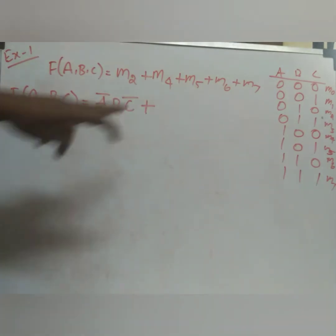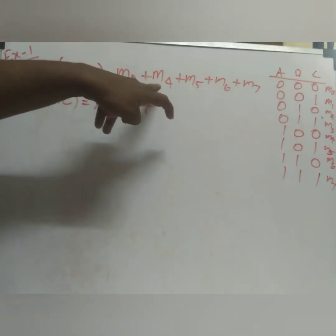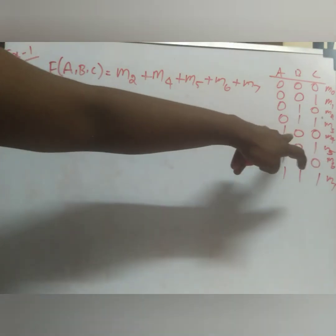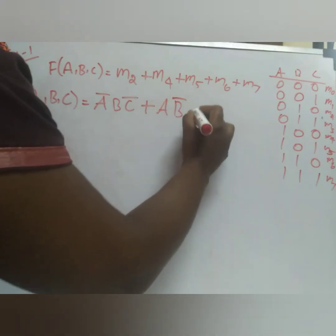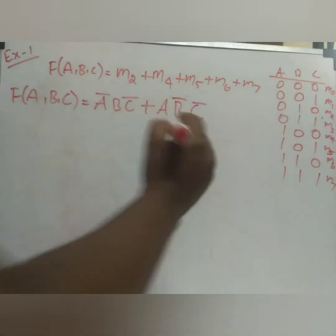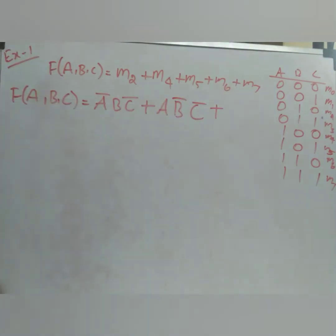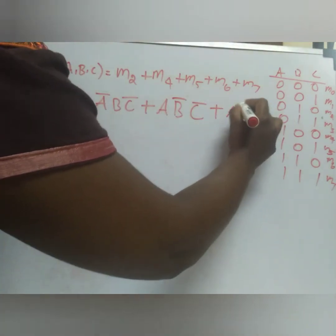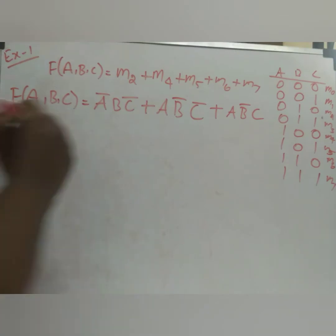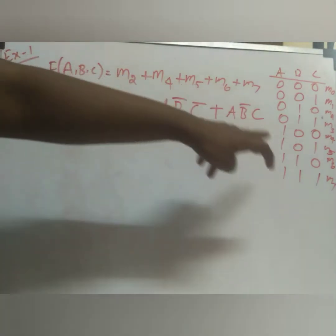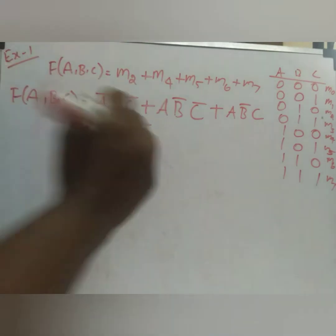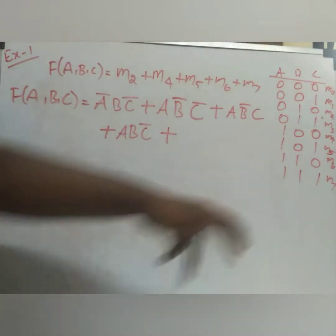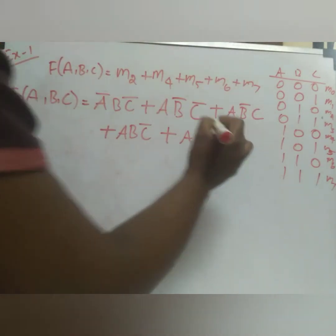Continuing the expression: plus min term 5 which is A=1, B=0, C=1 giving AB̅C; plus min term 6 which is A=1, B=1, C=0 giving ABC̅; plus min term 7 which is A=1, B=1, C=1 giving ABC.